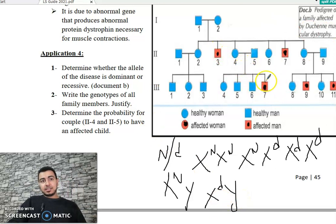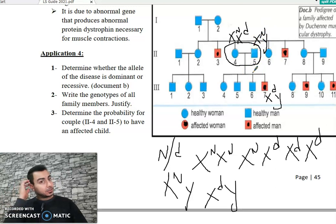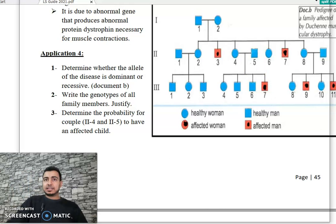I want to determine the risk for this couple to have an affected child, 4 and 5. The genotype of female 2, 4 is XN XD because she is normal. The male 2, 5 is XD Y because he is affected. Why? If XN Y, it's normal, but XD Y means he inherited XD from the mother. So the mother carries XD but masked because she is normal by N allele. This father is XN Y because he is normal. What's the risk for this couple to have an affected child?